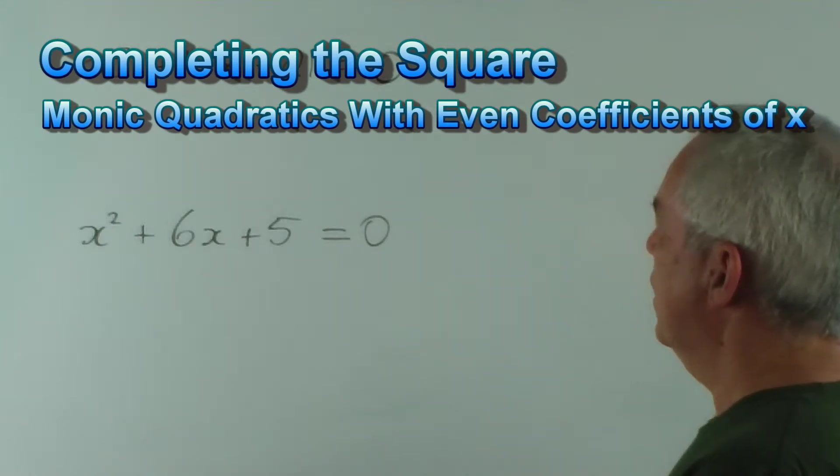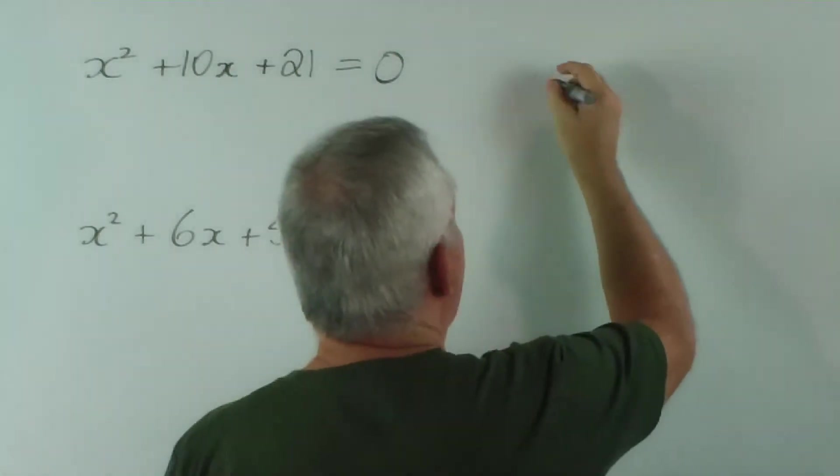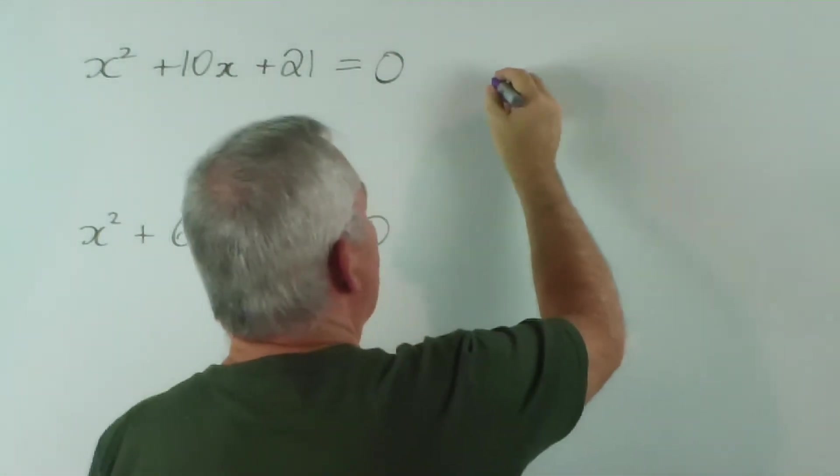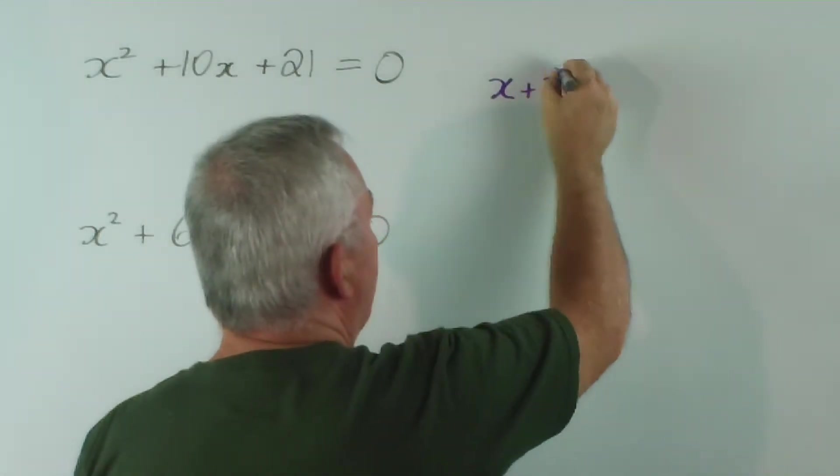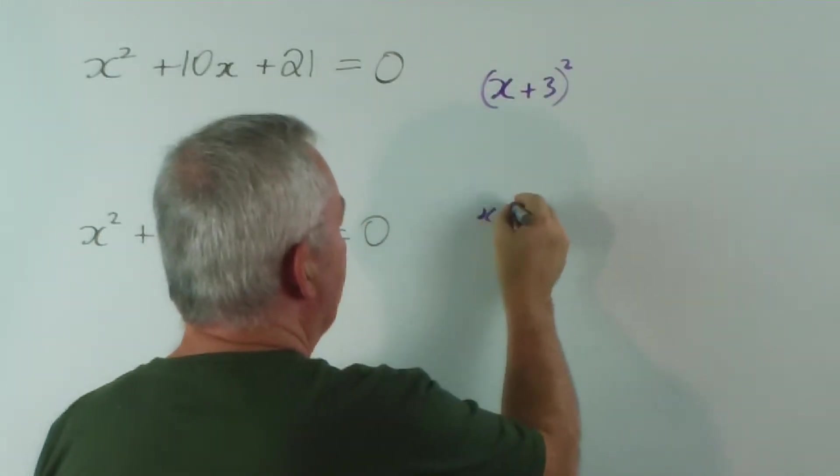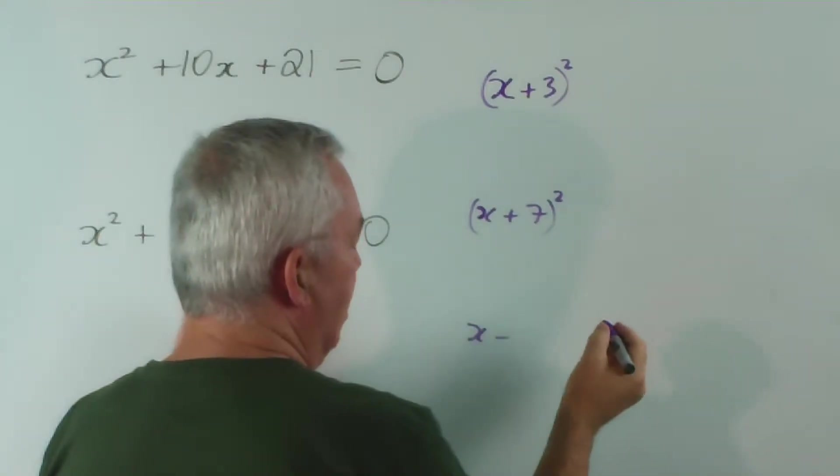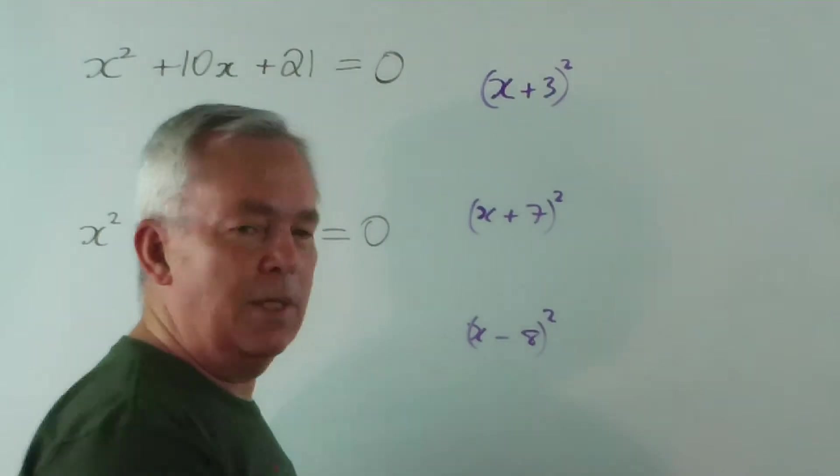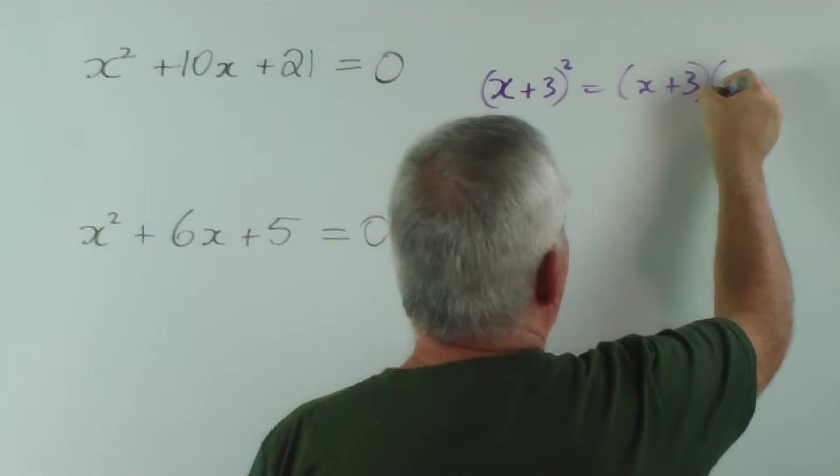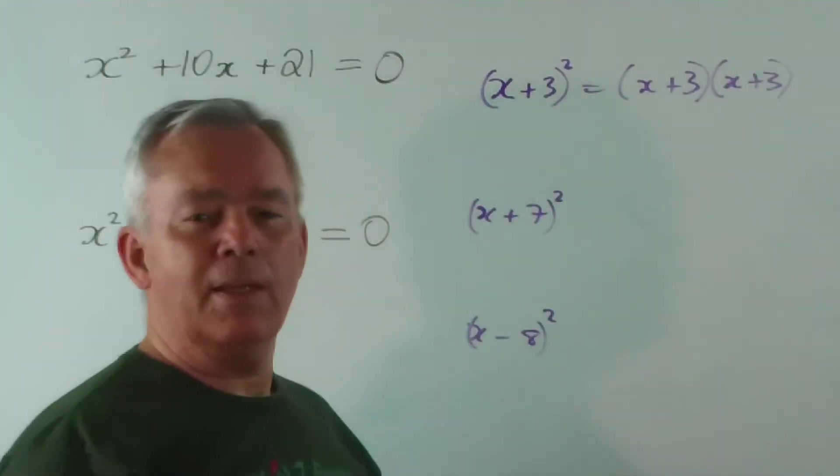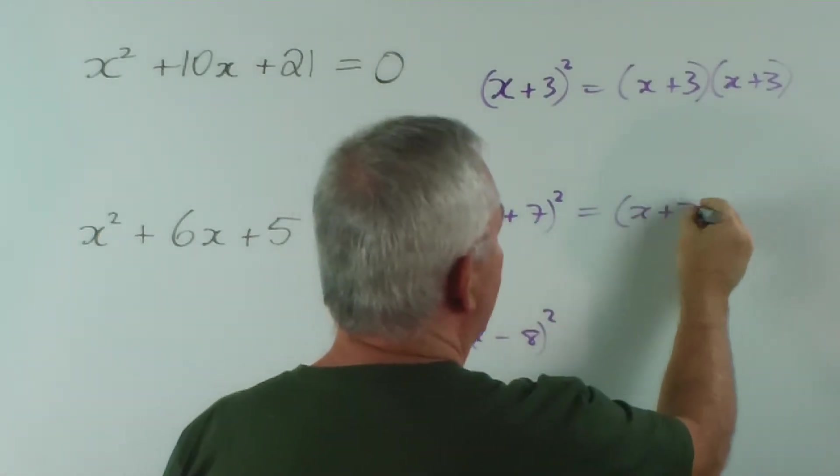So how do we complete a square? Well, the first thing is to understand how to recognize one and what one looks like when it's worked out. So let's, on this side of the board, imagine we have a perfect square - something like (x+3)², or (x+7)², or even (x-8)². We'll do this very quickly. You know that squaring something means writing it out twice and multiplying the two factors together.